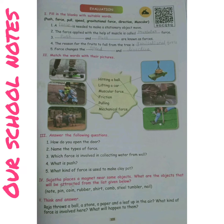Sujatha places a magnet near some objects. What are the objects that will be attracted from the list given below? The objects attracted to the magnet are: pin, coin, and steel.